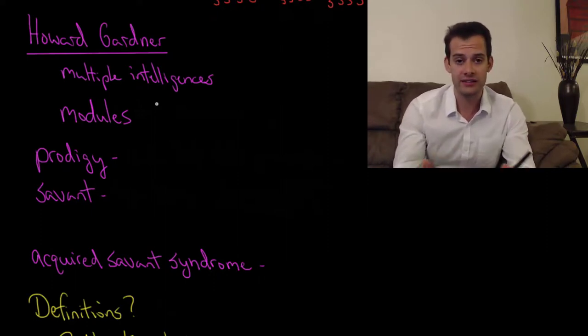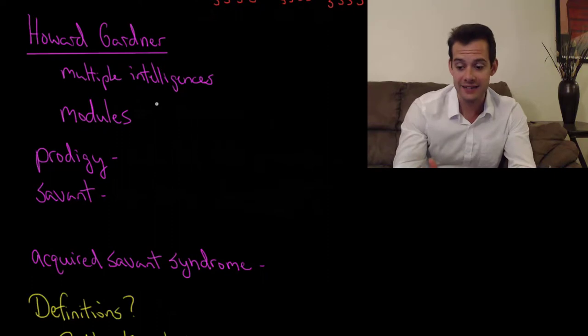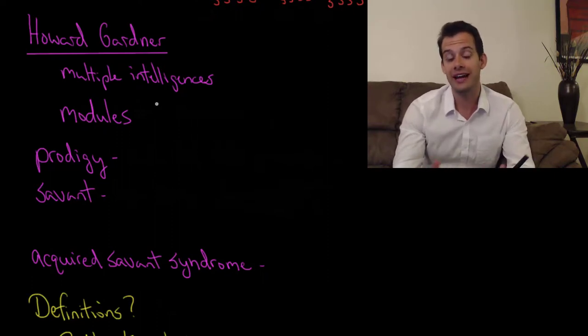On Gardner's list he includes verbal intelligence, mathematical intelligence, musical, spatial, bodily kinesthetic, interpersonal, intrapersonal, and naturalistic intelligences.